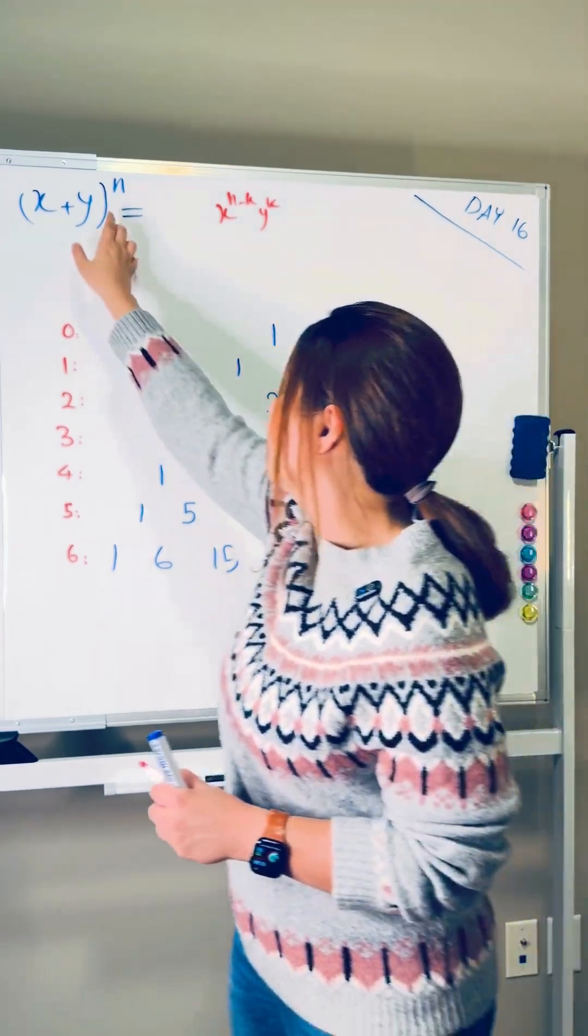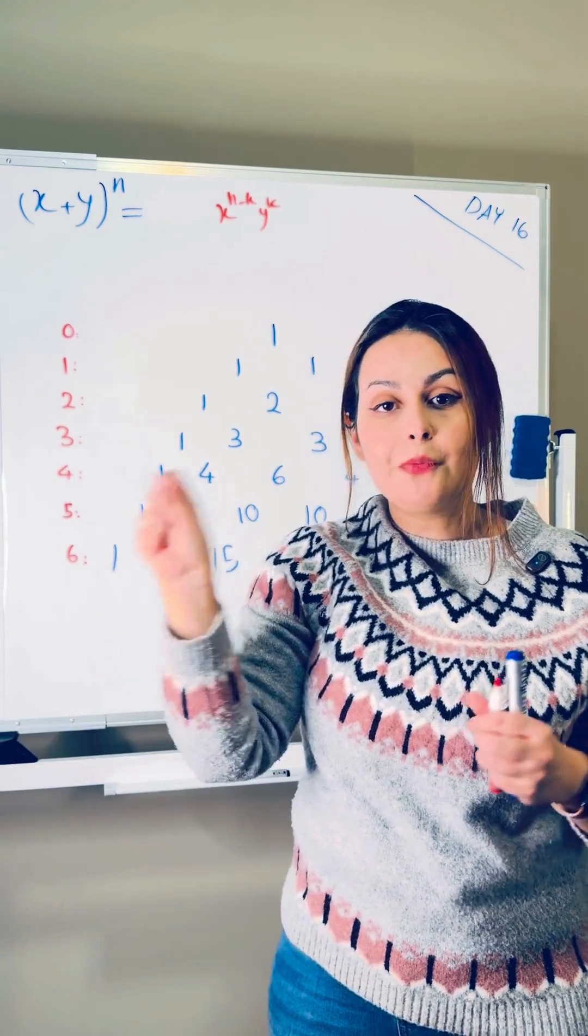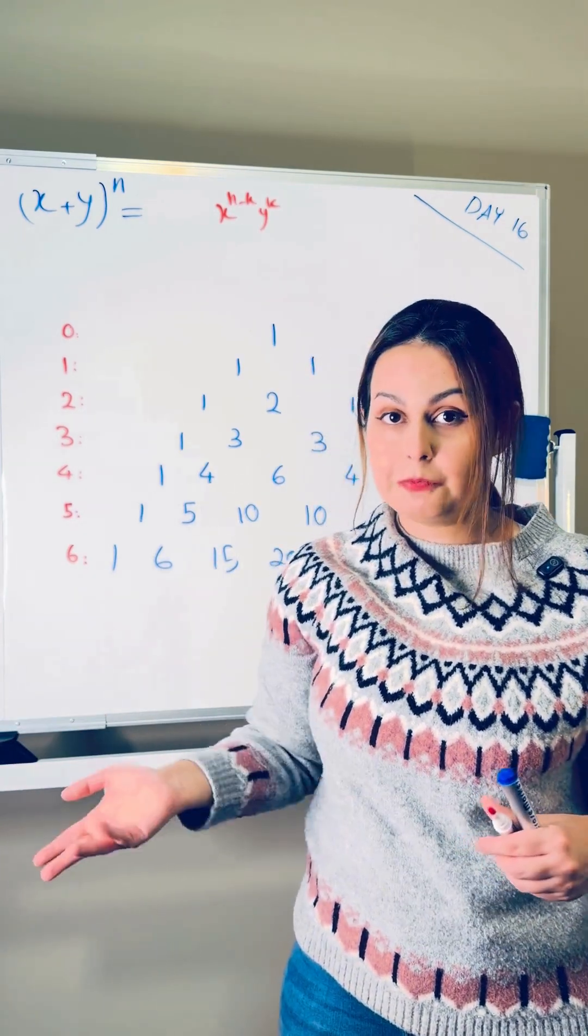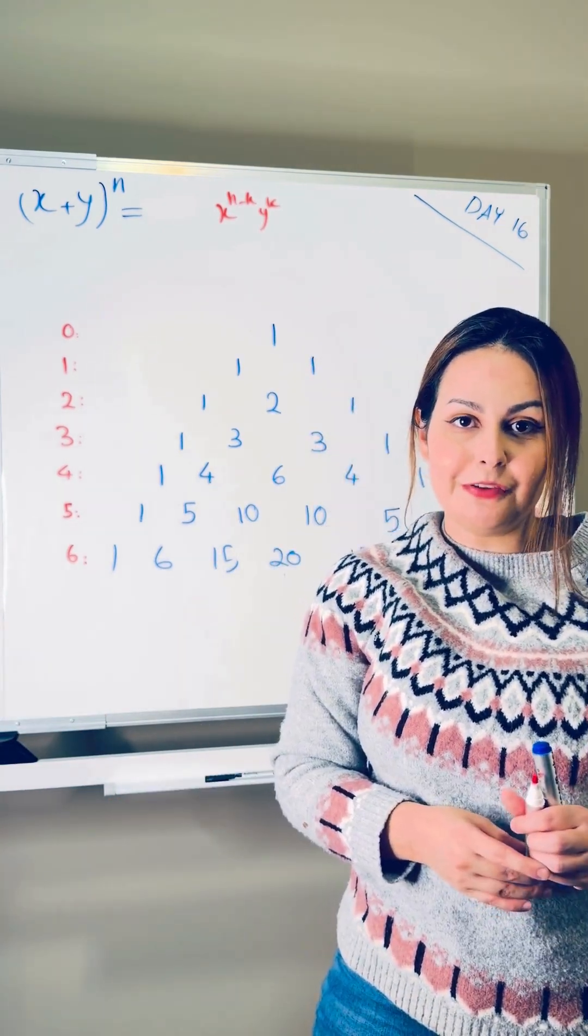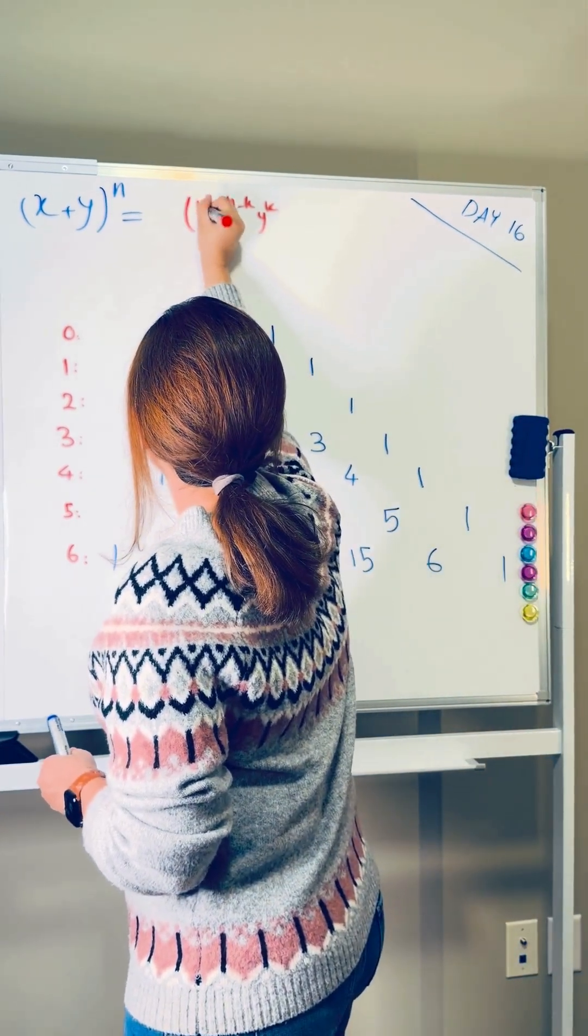And then if I want to have y to the power of k, it means that out of n parentheses of x plus y multiplying by each other, I want exactly k of them to give me y and everything else is going to give me x. So I need to multiply it by n choose k.